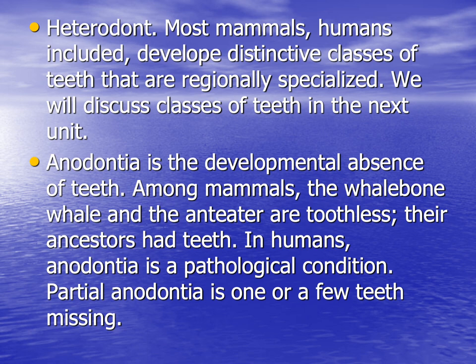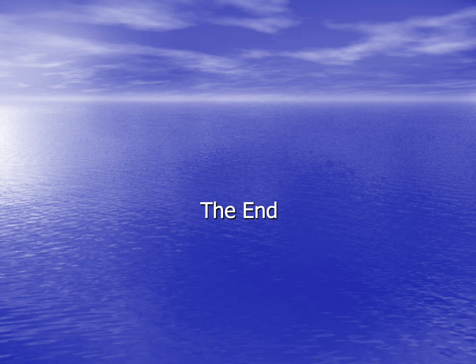Anodontia is the developmental absence of teeth; among mammals, the whalebone whale and the anteater are toothless examples. In humans, anodontia is a pathological condition; sometimes we see partial anodontia, which is the absence of one or a few teeth. That will be all for today. Next week we will be talking about tooth landmarks that we use to communicate with each other and with other dentists. I wish you all the best.